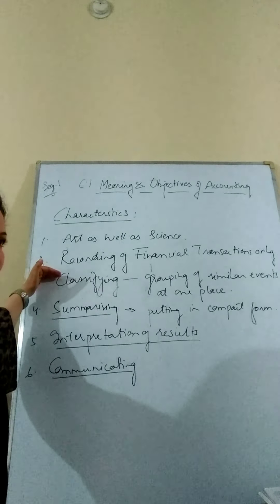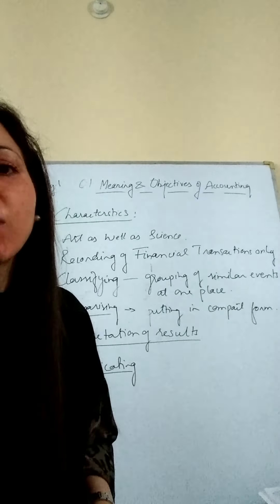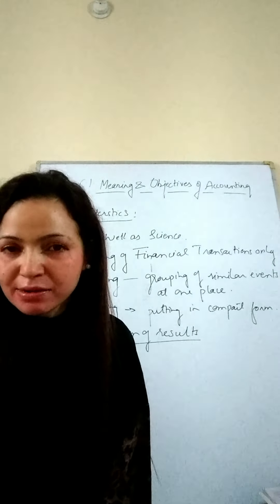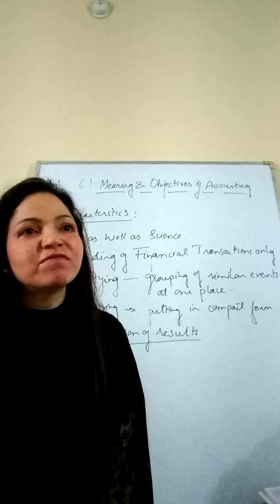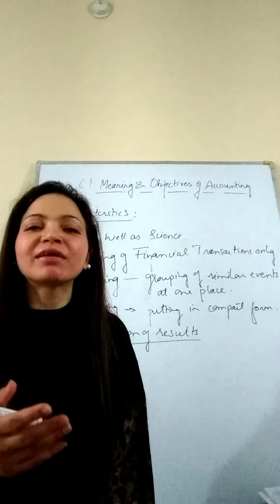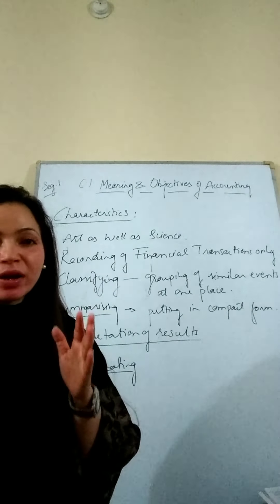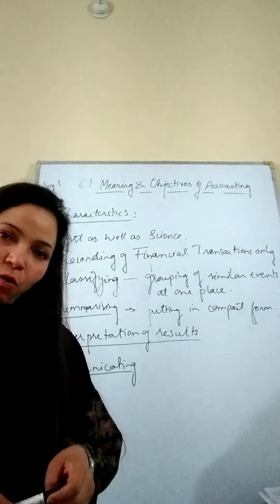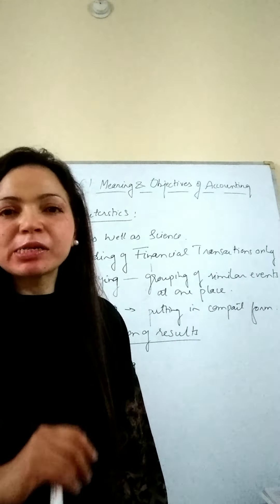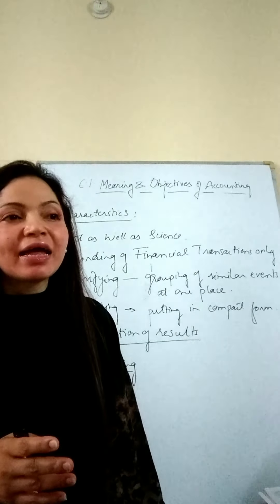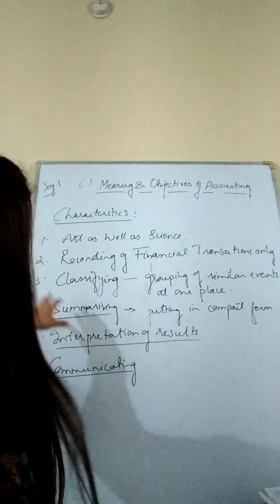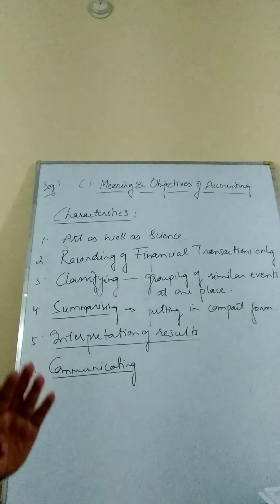The second feature is recording of financial transactions. In accounting, we can record only financial transactions — we cannot record anything that cannot be measured in terms of money. For example, a good reputation or good relations with employees cannot be recorded. But if you purchase a building for 5 lakh rupees, that can be recorded. Attending a party cannot be recorded because it cannot be calculated in monetary terms.